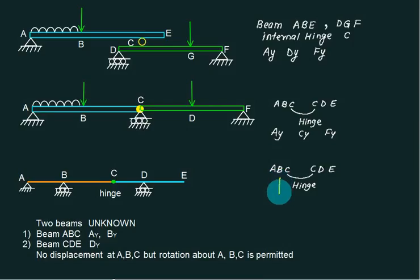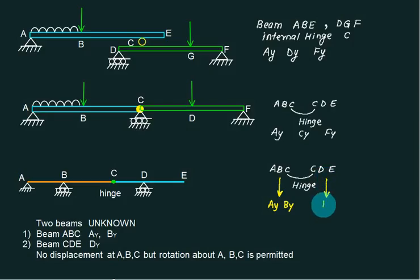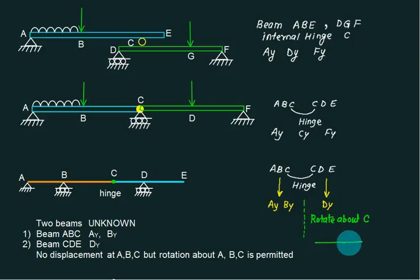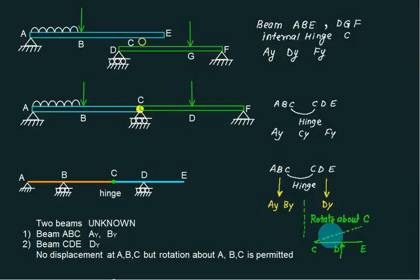How many unknowns for ABC? Two unknowns: AY and BY. And how many unknowns for CD? Only one — DY. To solve for DY, consider only the CDE part and rotate the beam about C. Show the force here and find DY.